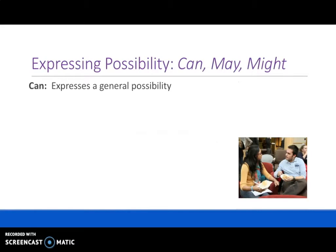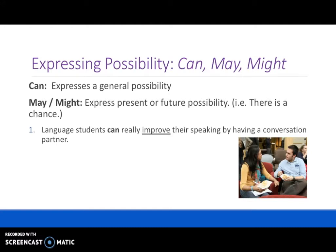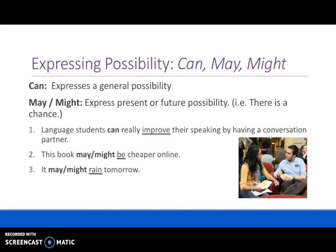Expressing possibility with can, may, and might. Can expresses a general possibility. For example: language students can really improve their speaking by having a conversation partner — it is possible for language students to improve this way. May or might express present or future possibility — there is a chance that something might happen. For example: this book may be cheaper online, or this book might be cheaper online — a present possibility. It may rain tomorrow, or it might rain tomorrow — a future possibility, meaning there is a chance of rain tomorrow.